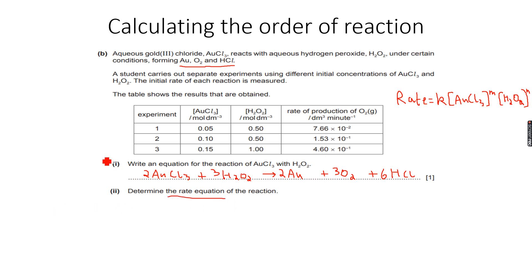If you look at experiments one and two for now, don't look at experiment three. We know that the concentration of AuCl3 is doubling from experiment one to experiment two.